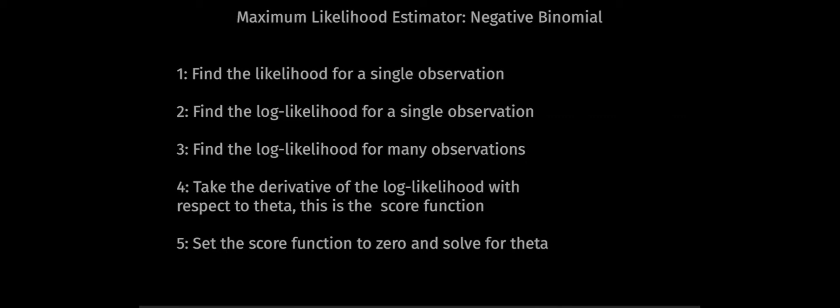Then we're going to take the derivative of that function, which we're going to call the score function. We're going to set that score function equal to zero and solve for our parameter theta, and that's going to be our maximum likelihood estimator. So let's see an example of how we do this.